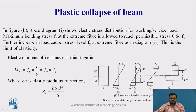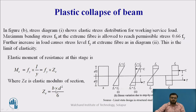At the second stage, this figure is known as the limit of elasticity. The elastic moment of resistance ME is given by the Euler-Bernoulli equation: ME = FY × I/Y. Here I/Y is the elastic section modulus ZE. For a rectangular section, I = BD³/12 and Y = D/2, giving ZE = BD²/6. ZE is the elastic section modulus.